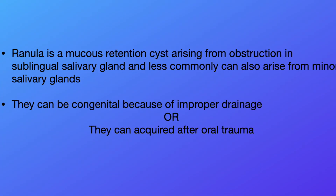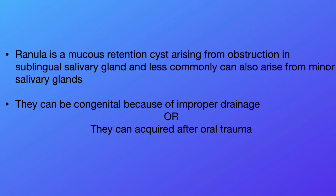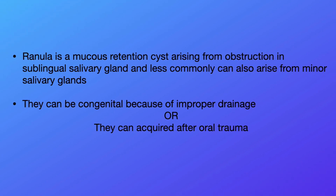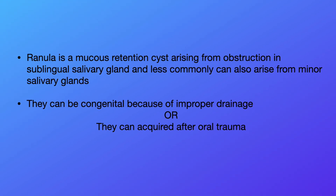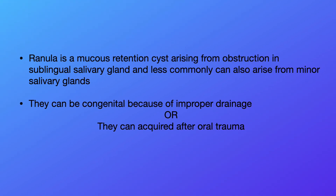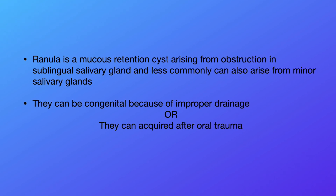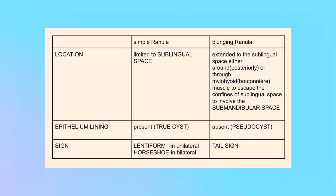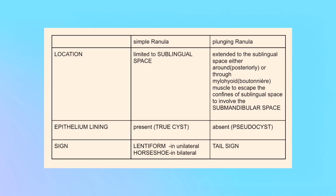Ranulas are mucus retention cysts arising from sublingual glands or minor salivary glands. They are classified based on their extent into simple ranulas and plunging ranulas. Simple ranulas are confined to just the sublingual space, while plunging ranulas extend by extravasation into the submandibular space.